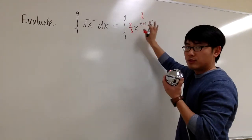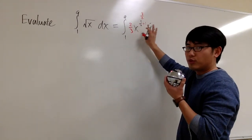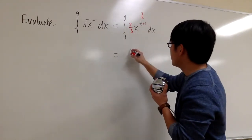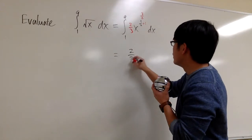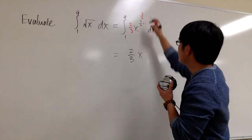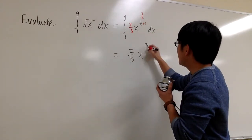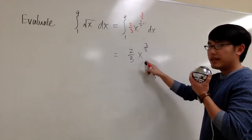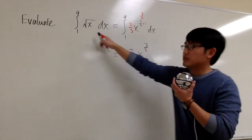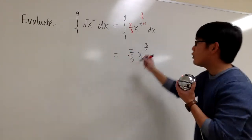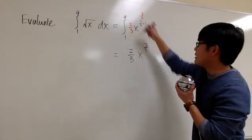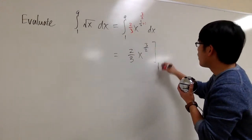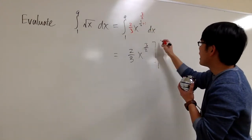This part is to find the anti-derivative. So the anti-derivative is 2/3 times x to the 3/2 power. This is the anti-derivative for square root of x. Now I still have to plug in the numbers and subtract, so let me set up the bracket from 1 to 9.